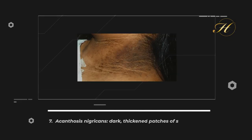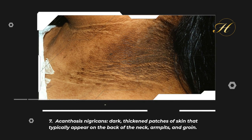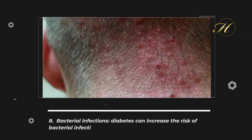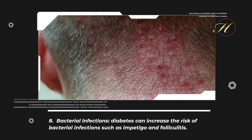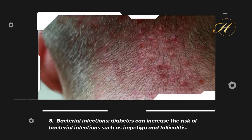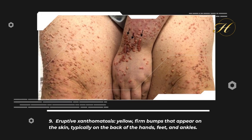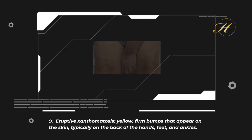7. Acanthosis Nigricans: Dark, thickened patches of skin that typically appear on the back of the neck, armpits, and groin. 8. Bacterial Infections: Diabetes can increase the risk of bacterial infections such as impetigo and folliculitis. 9. Eruptive Xanthomatosis: Yellow, firm bumps that appear on the skin, typically on the back of the hands, feet, and ankles.